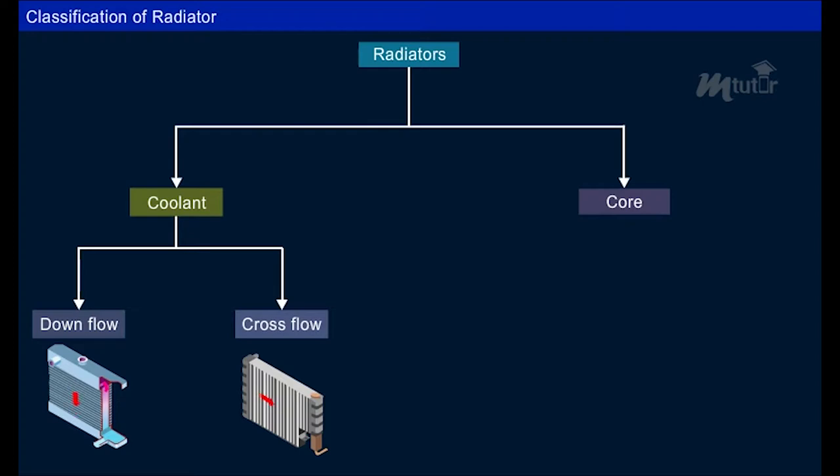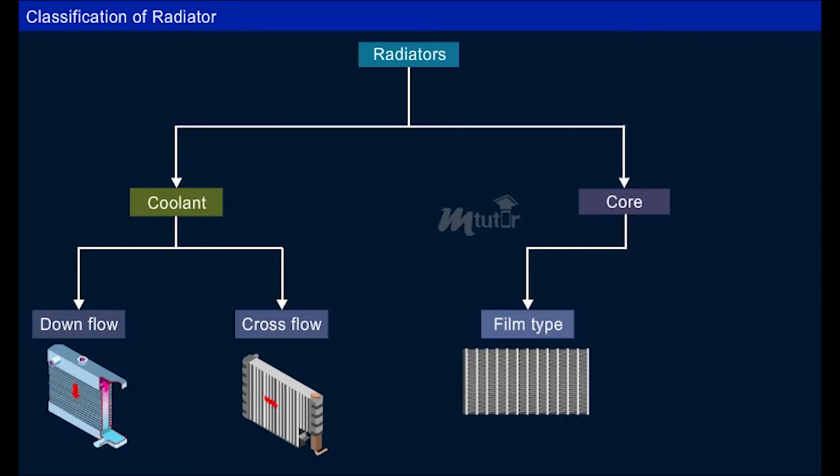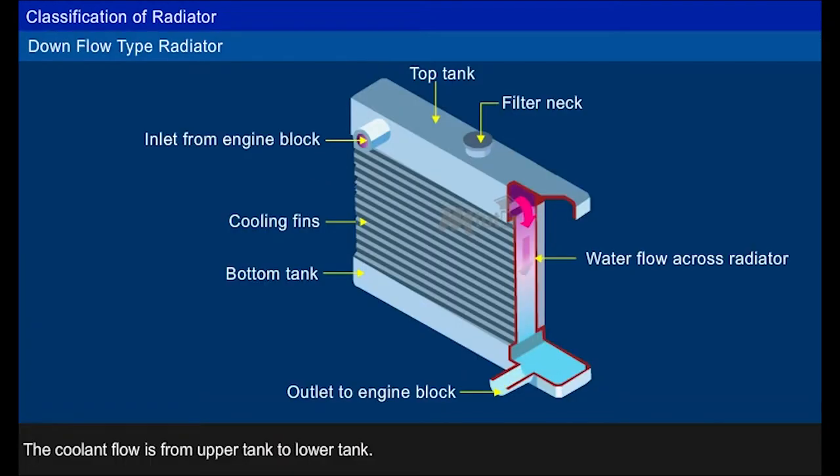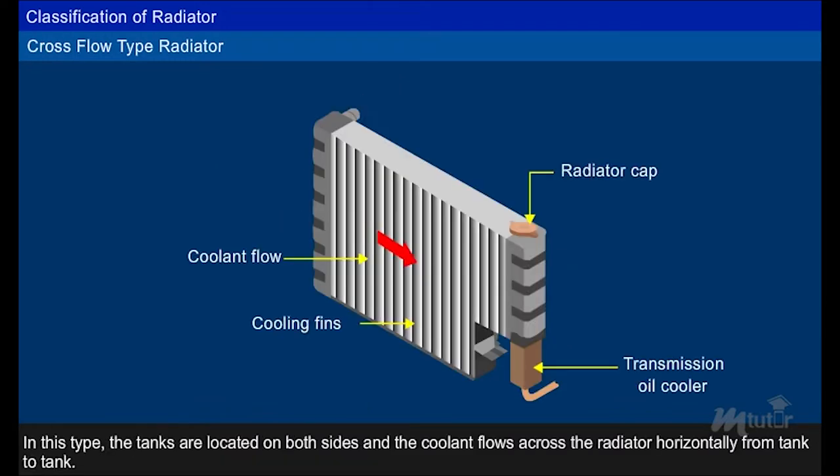According to the radiator matrix or core, it is classified as film type core and tube and fin type matrices. In down flow type radiator, the coolant flows from upper tank to lower tank. In cross flow type radiator, the tanks are located on both sides and the coolant flows across the radiator horizontally from tank to tank.